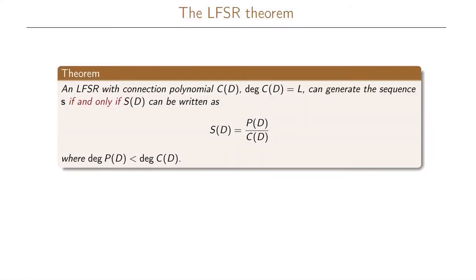We have the following theorem which we call the LFSR theorem. A linear feedback shift register, or LFSR, with the connection polynomial C(D) of degree L can generate the sequence S if and only if the D-transform of the sequence S can be written as a polynomial P(D) divided by the connection polynomial C(D), where the degree of P is less than the degree of C.